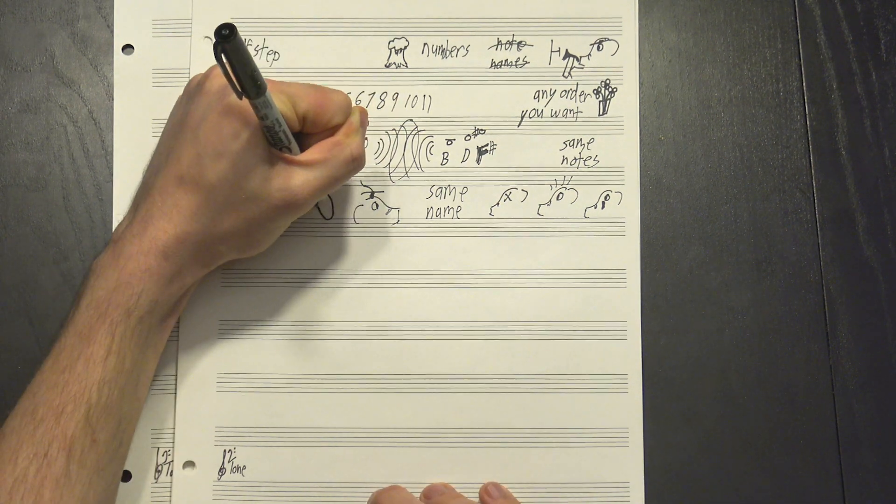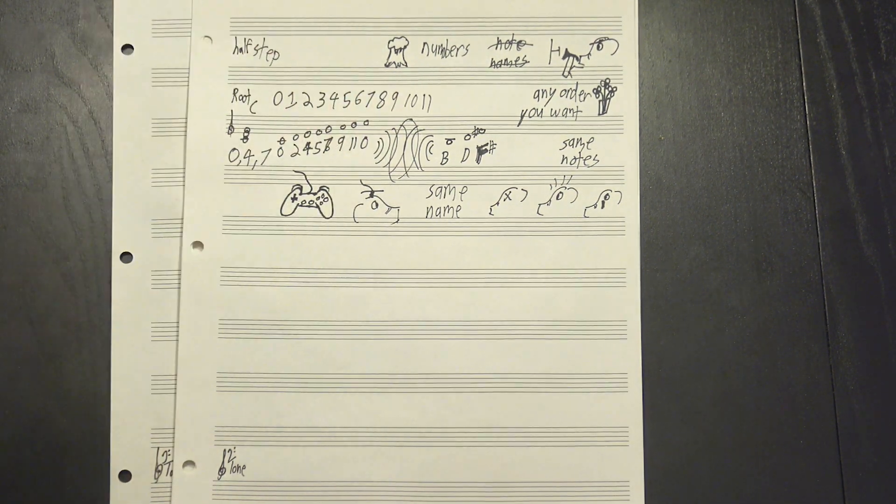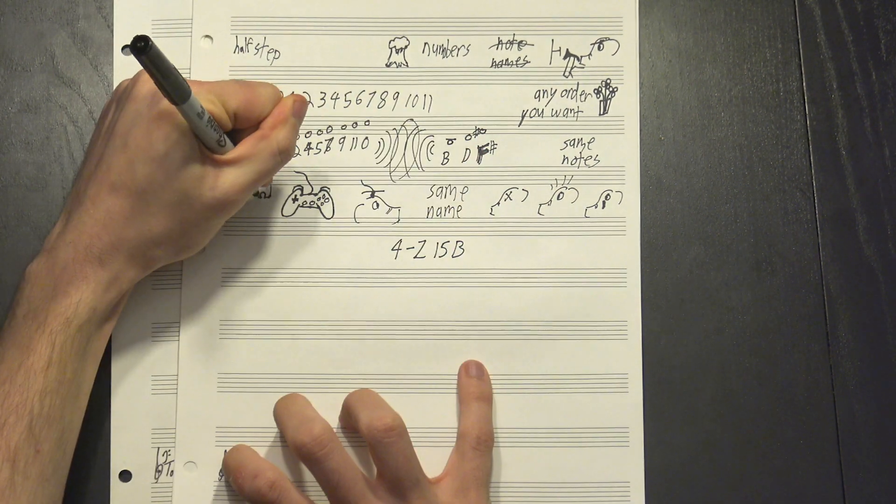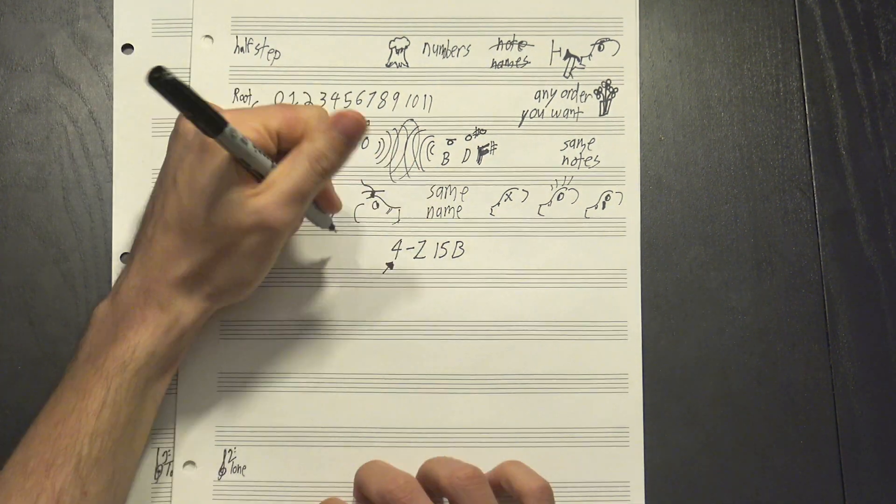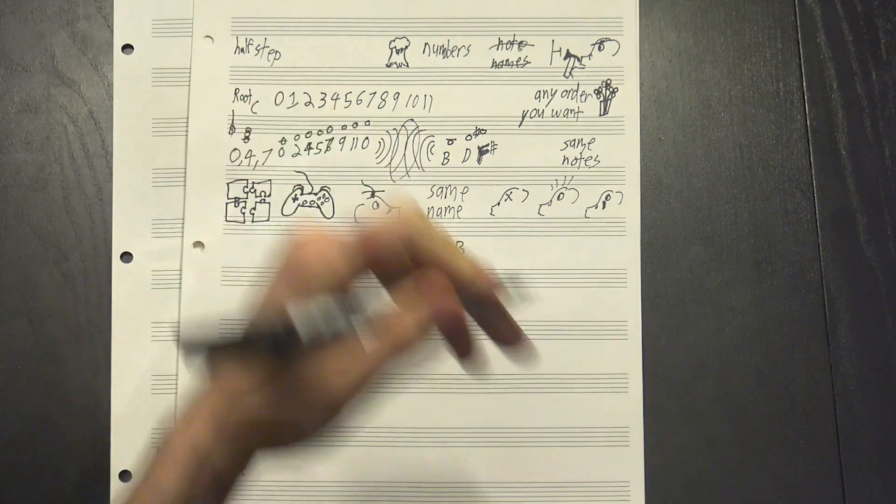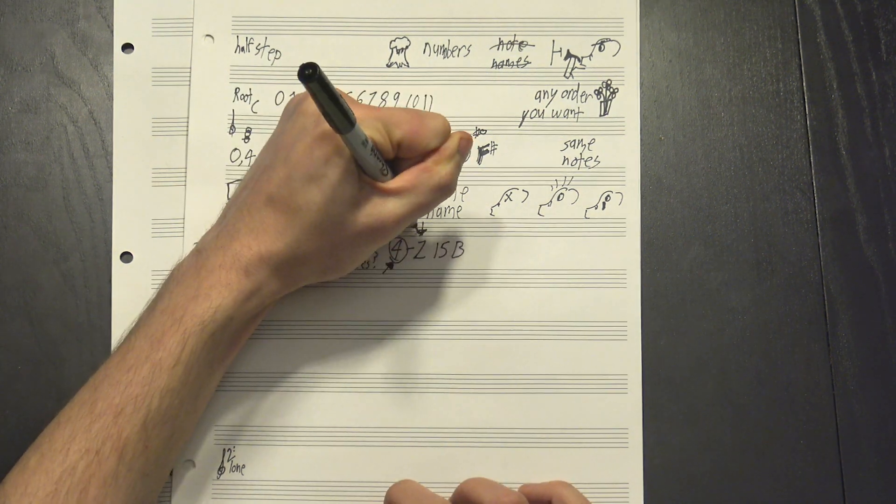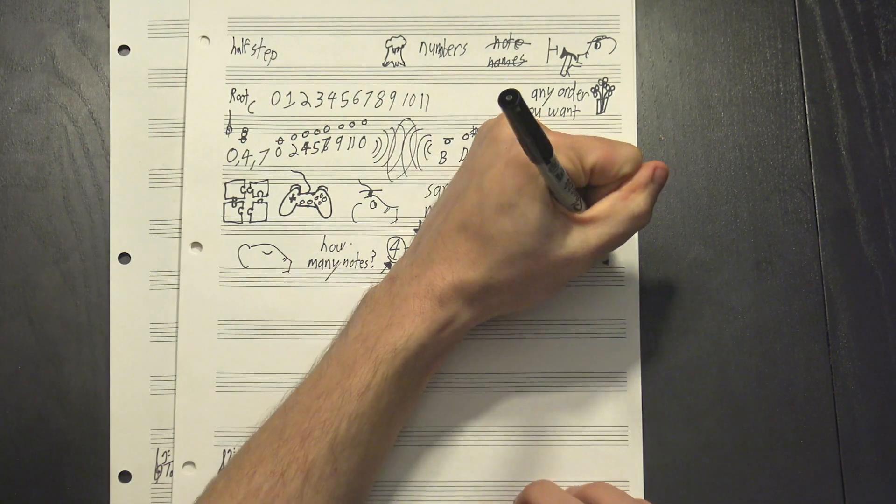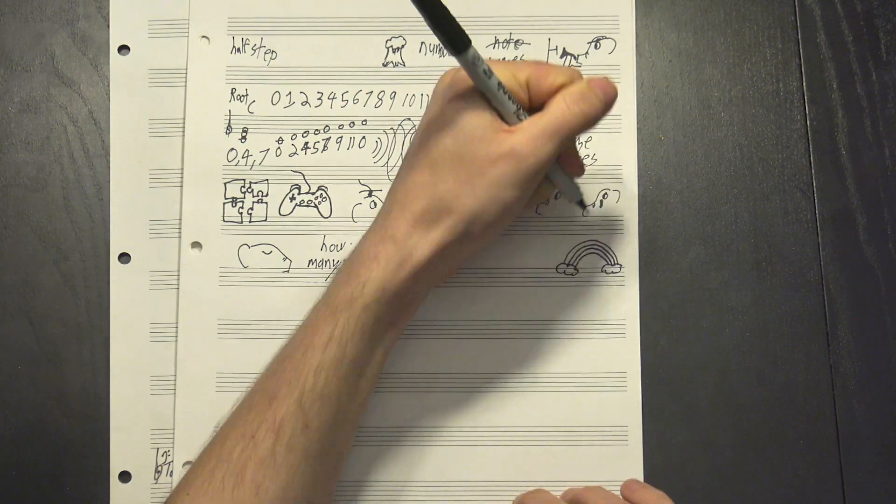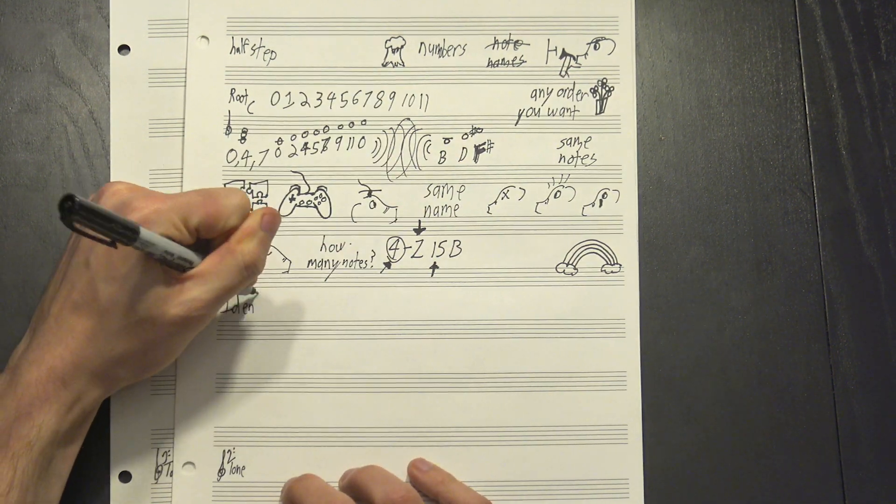With those out of the way, let's look at the actual system Forte used. A Forte number looks like this, and it consists of four pieces of information. The first number tells you how many total notes are in the set, in this case four. Then there's sometimes a Z here, which we'll ignore, it's just a marker for a property certain sets have.